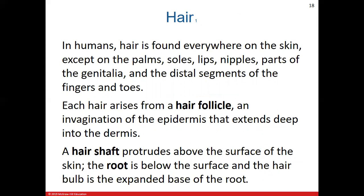We also need to talk about accessory structures including hair and nails. Hair is found almost everywhere on the skin but not where you have thick skin, such as the palms of the hands, soles of the feet, lips, nipple regions, parts of the genitalia, and usually the distal segments of fingers and toes. The hair follicle, found inside the dermis, is where hair is formed and grows, extending through the dermis and epidermis. The shaft is the hair portion visible on the surface of the skin, and anything below the skin is called the root.